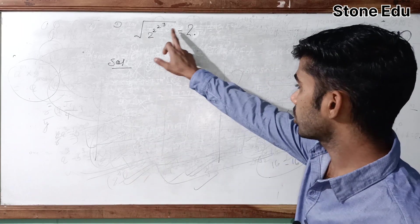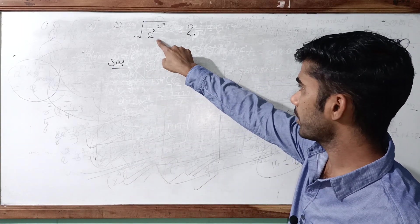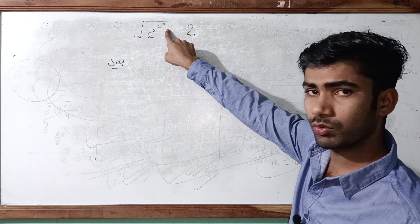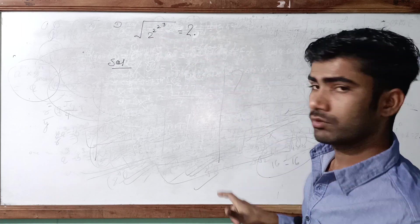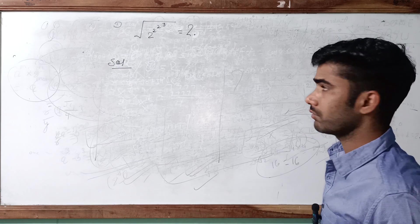Hello everyone, we have been given square root of 2 raised to 2 raised to 2 and then raised to 3 is equal to a numerical value. So what is that numerical value?